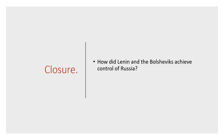Think about this: how did Lenin and the Bolsheviks achieve control of Russia? Think about the Russian Civil War and how Lenin was able to draw people to his side and gain control — that will help you answer the question. Hope you have a good rest of your day or night, and I will talk to you soon.